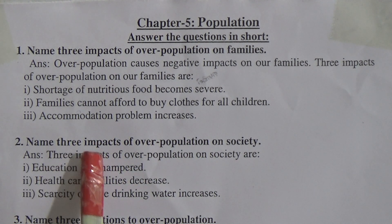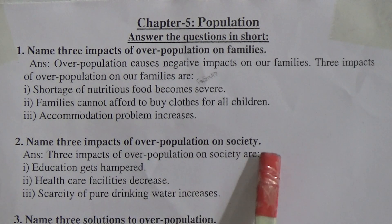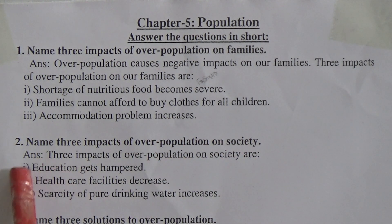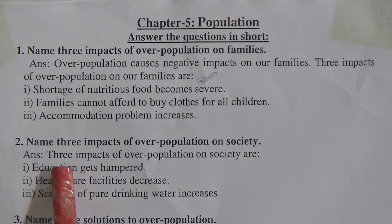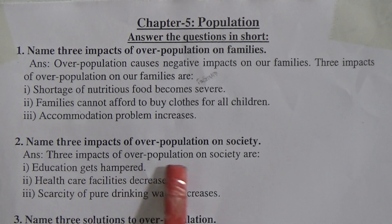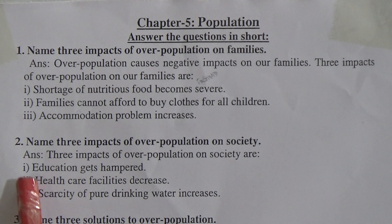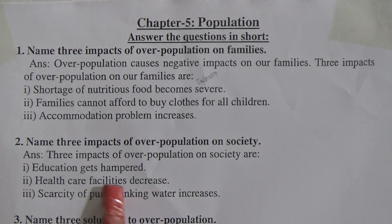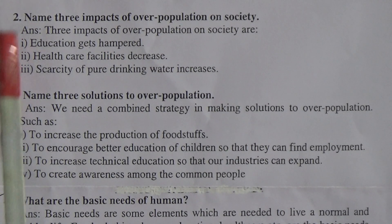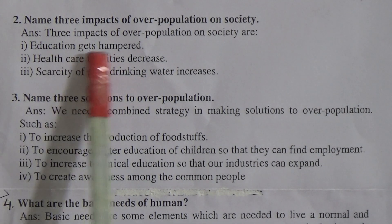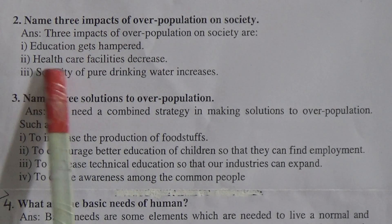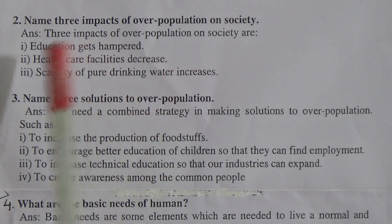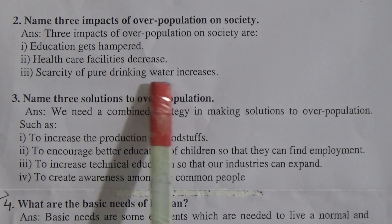Question Number Two: Name three impacts of overpopulation on society. Answer: Three impacts of overpopulation on society are: Number One — education gets hampered. Number Two — healthcare facilities decrease. Number Three — scarcity of pure drinking water increases.